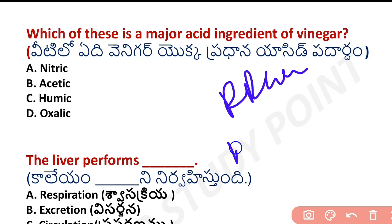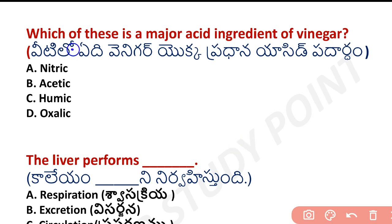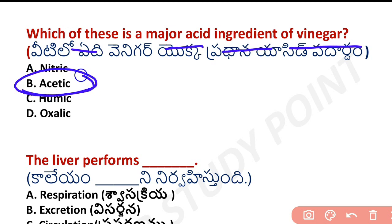Today's first important MCQ: which of the following is the major acid ingredient of vinegar? The answer is acetic acid. Vinegar contains acetic acid as its major acid component.